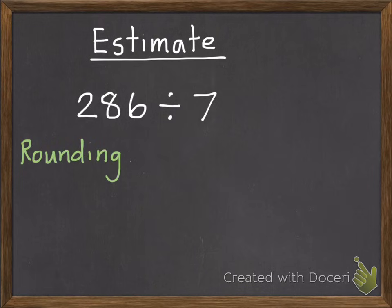But we're not going to do that in division, and here is why. When rounding this, we'd make 286, 300. But the whole point of estimating is to get as close to the real answer as you can in as quick a way possible.